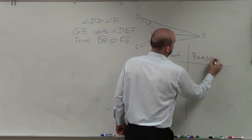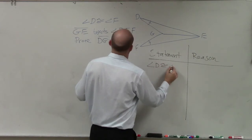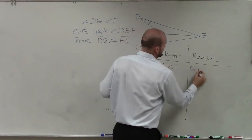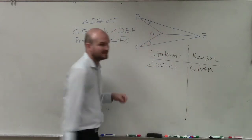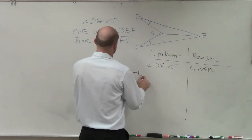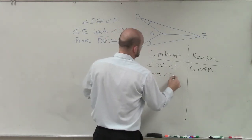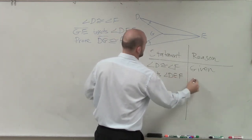Statement, reason. Angle D is congruent to angle F. The reason why we know that's true, because it's given to us. Then we have GE bisects angle DEF, given.